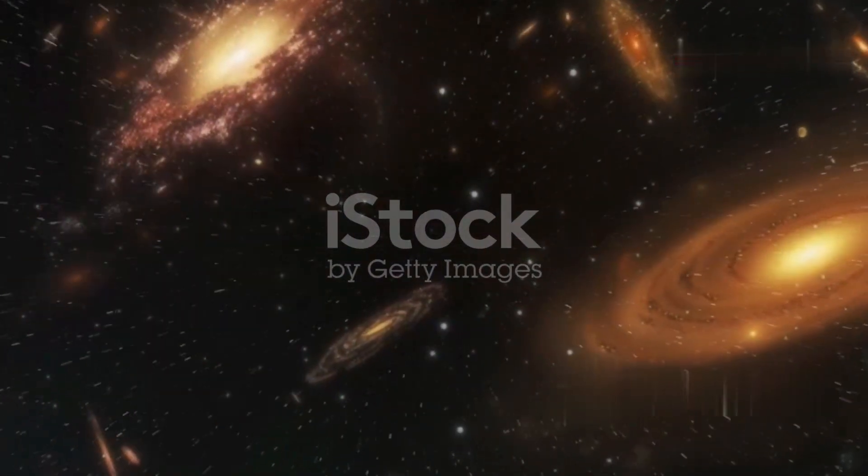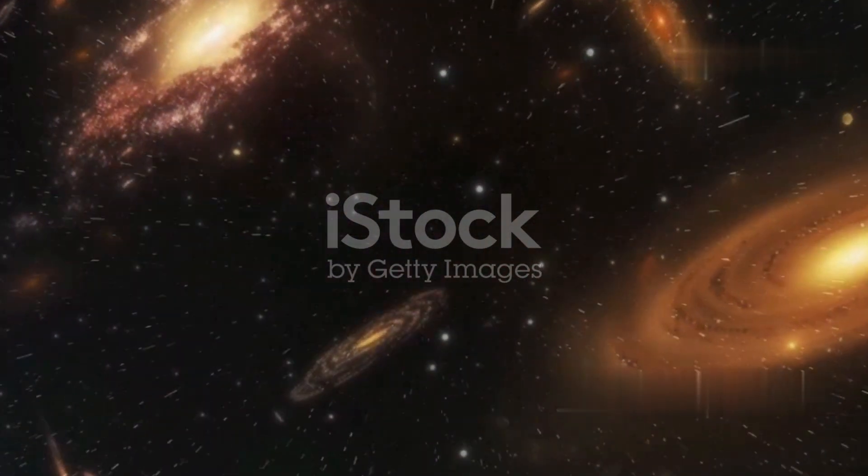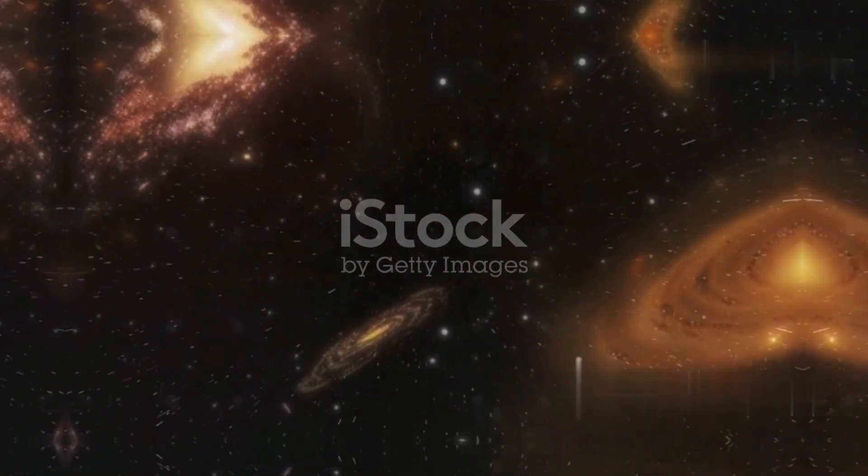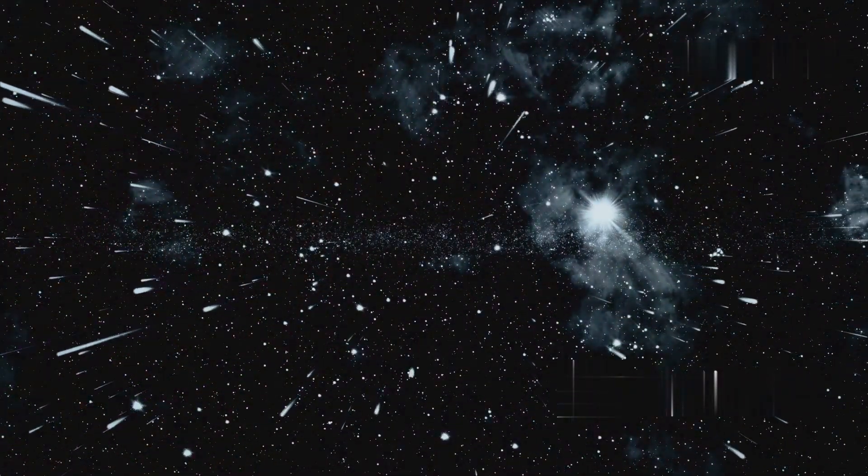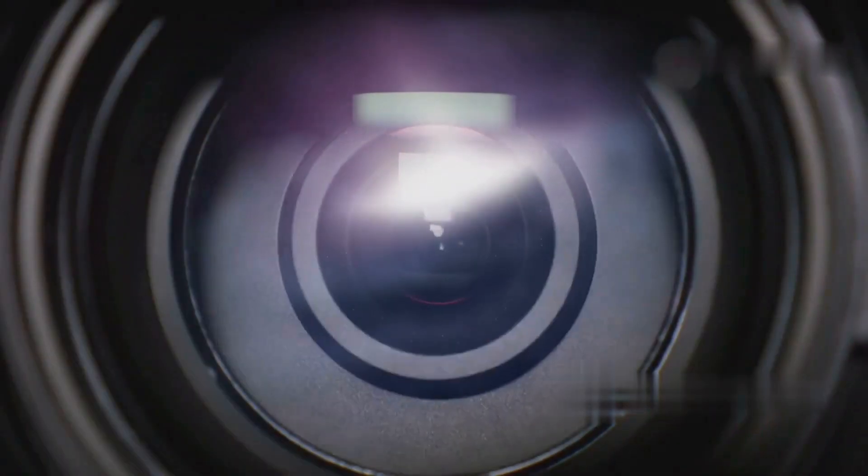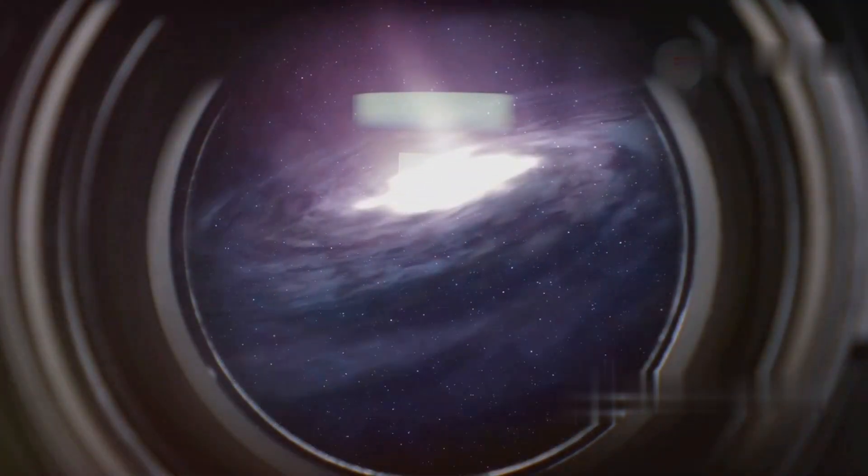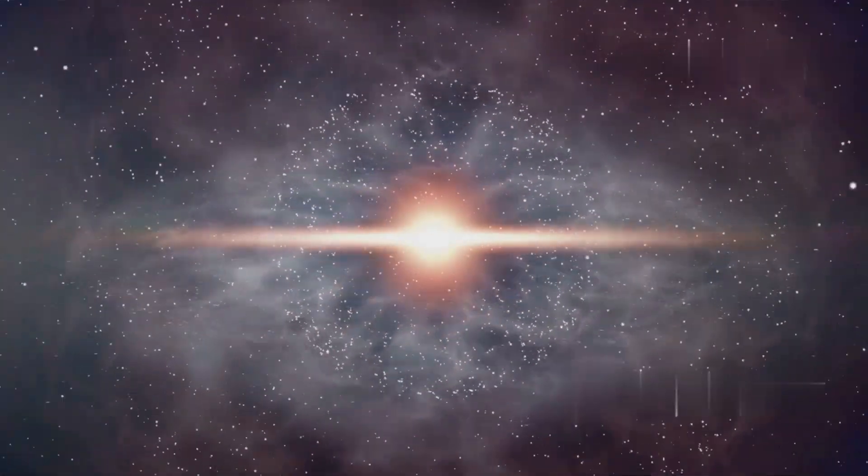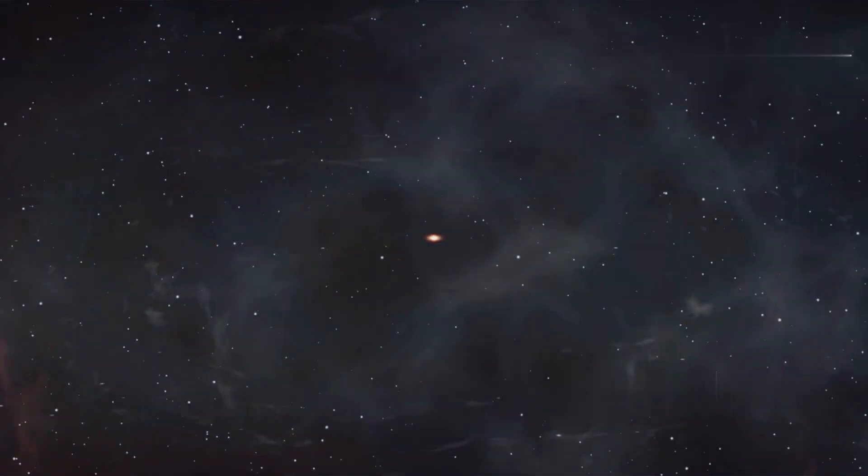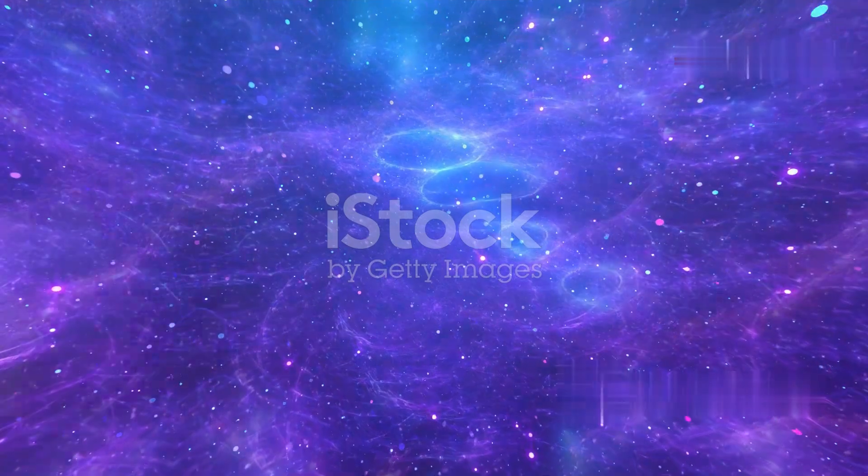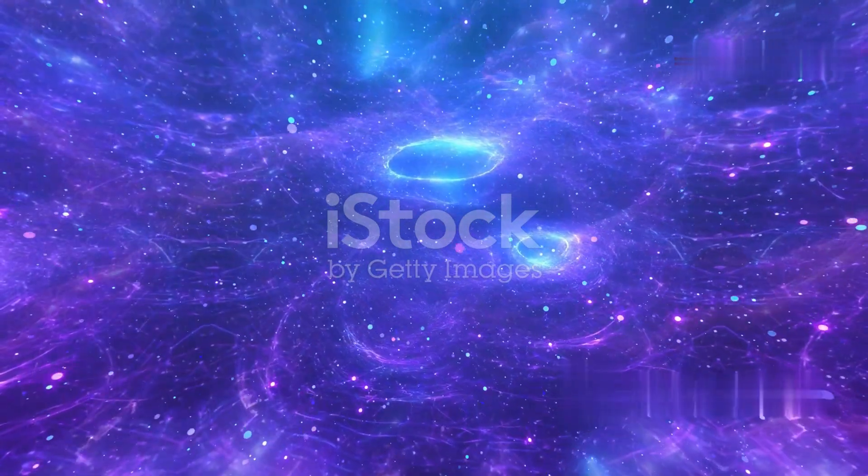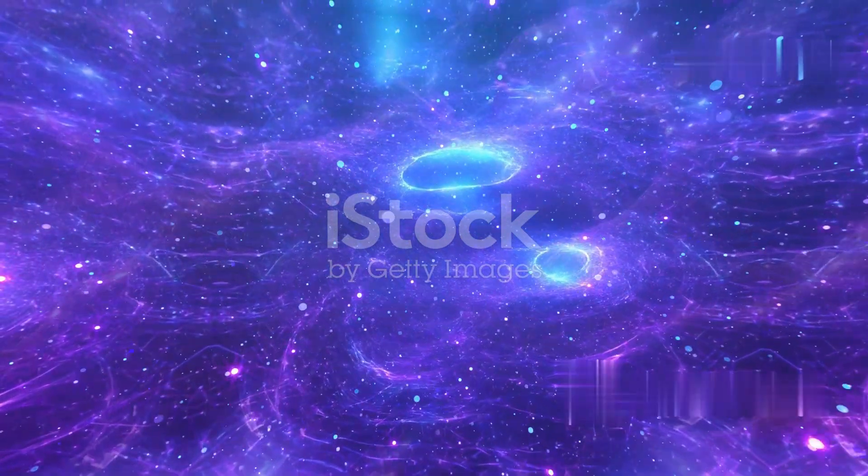The observable universe is the portion of the universe that we can currently observe from Earth. It is limited by the finite speed of light and the age of the universe. Because light takes time to travel, when we look at distant objects, we are seeing them as they were in the past. The farthest we can see is determined by the age of the universe, which is about 13.8 billion years. This means that the observable universe has a radius of about 46.5 billion light years in all directions from Earth.